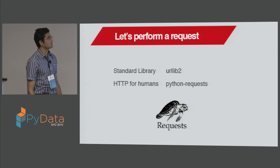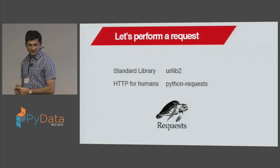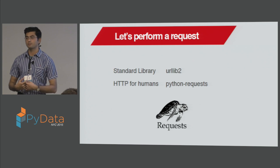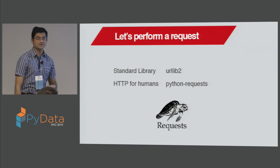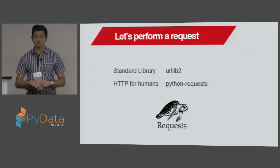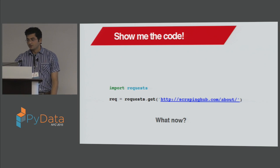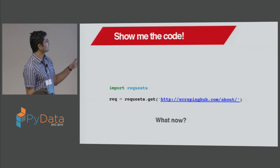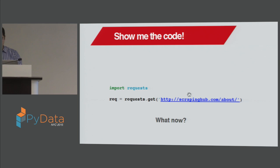So let's perform a request programmatically. You need urllib2, which is a standard Python library for making HTTP requests, but it's really messy and complicated. So we have something called Python requests, which makes it much easier to use. Let's do some coding. This is a very basic request — import requests and GET some URL. Let's see what happens.